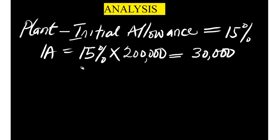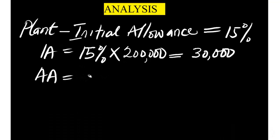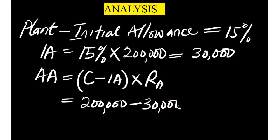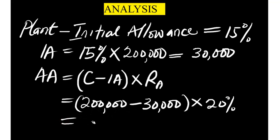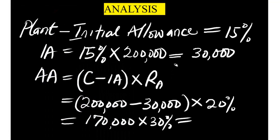Next, we calculate the annual allowance for plant. The annual allowance rate is 20%. The formula is: (Cost − Initial Allowance) × rate of annual allowance. So we have 200,000 − 30,000 = 170,000. Then 170,000 × 30% — wait, checking: 170,000 × 0.30 = 51,000. So the annual allowance for plant is 51,000.